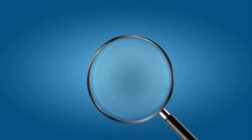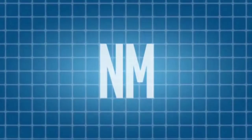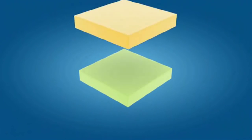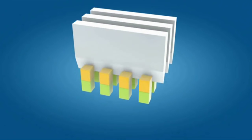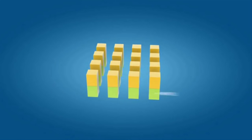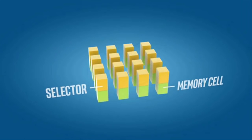So, how'd we do it? To make 3D Crosspoint inexpensive, we needed to pack lots of capacity into a tiny footprint. We started by slicing submicroscopic layers of materials into columns, each containing a memory cell and selector.